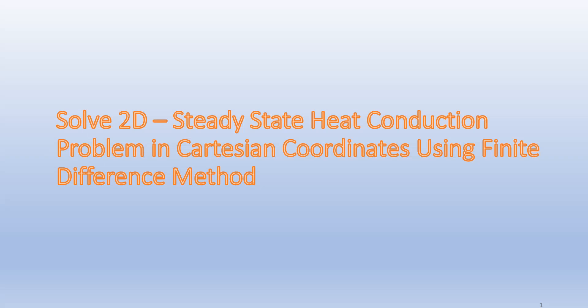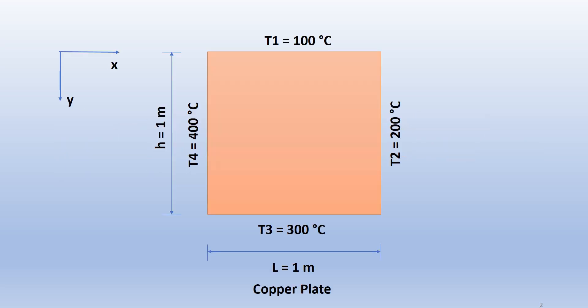Hello friends. In the previous videos we have solved some 1D steady-state and transient heat conduction problems in Cartesian and cylindrical coordinates using the finite difference method. In this video we are going to solve a 2D steady-state heat conduction problem in Cartesian coordinates using the finite difference method. Our domain is a copper plate which is 1 meter long and 1 meter wide.